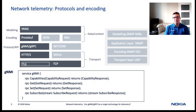The gRPC Network Management Interface, GNMI, is built on top of the gRPC framework, and it provides API capability to read and write data from and to the device. As you can see, it extends beyond just retrieving information from network devices — it can also be used for configuration. But for the purpose of this video, we're only focusing on the capabilities of GNMI in terms of retrieving and streaming information from the network.